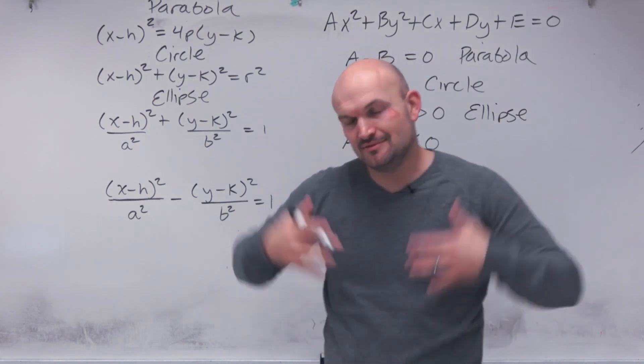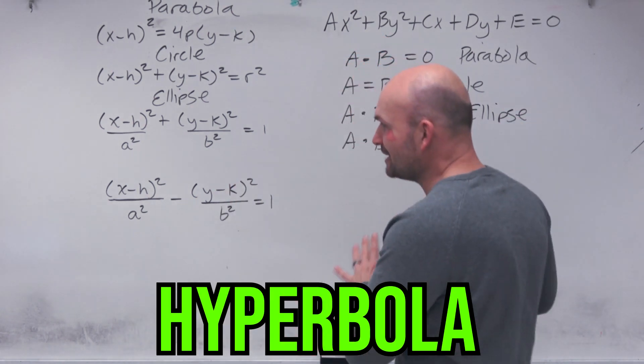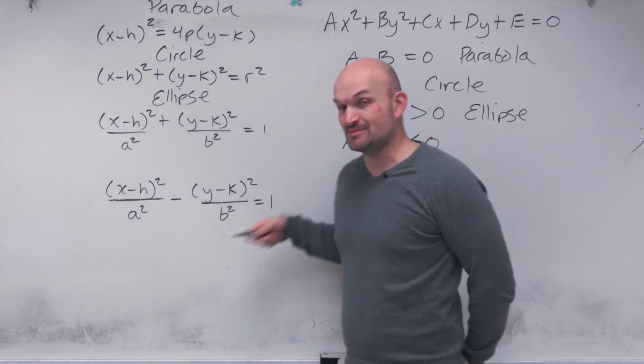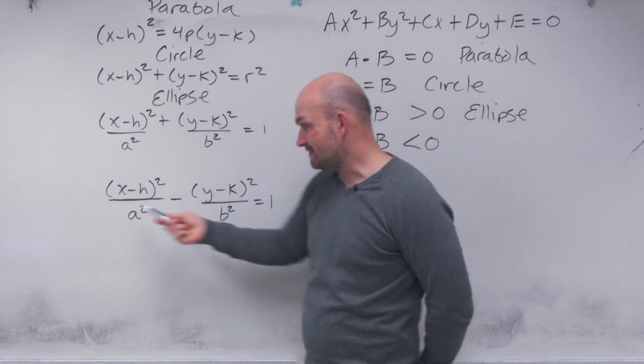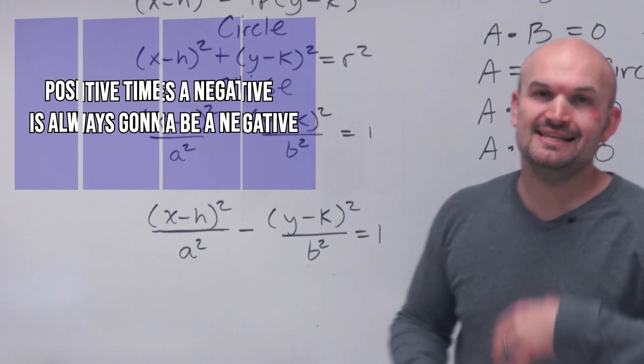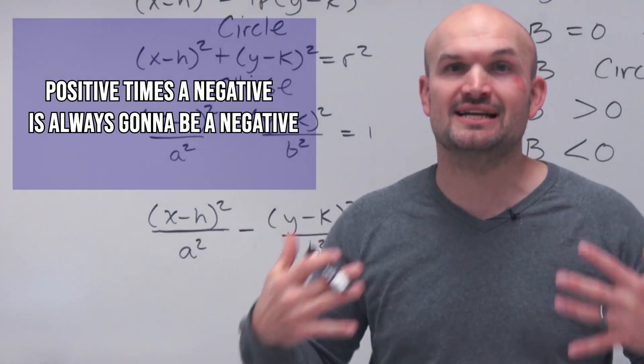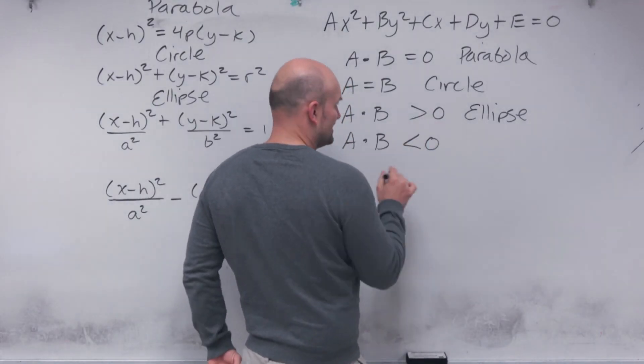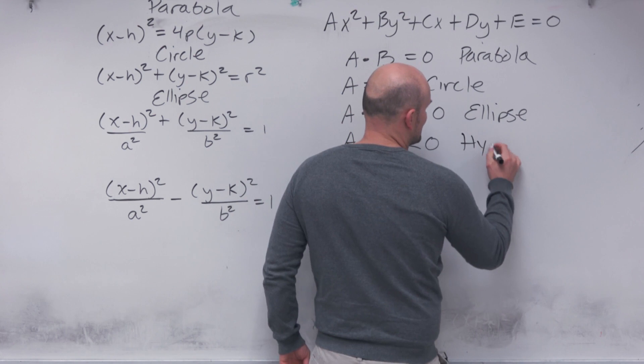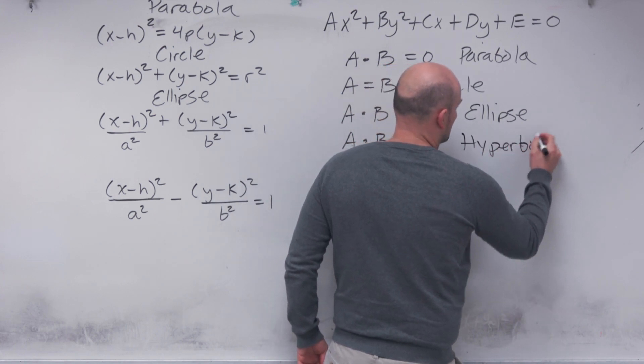And the last example, you can definitely tell is going to be a hyperbola. But I want to show you that this equation from a standard form tells us that this coefficient is positive, this coefficient is negative. Anything times a positive times a negative is going to give you a negative, which would be less than zero, which means it's a hyperbola.